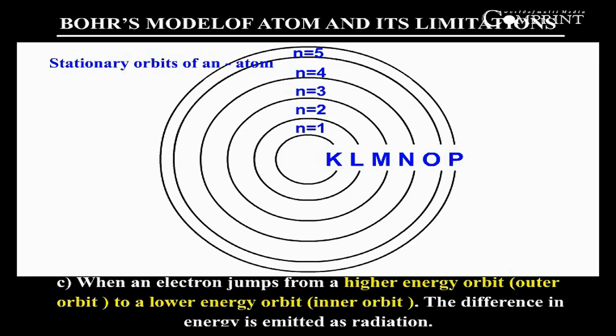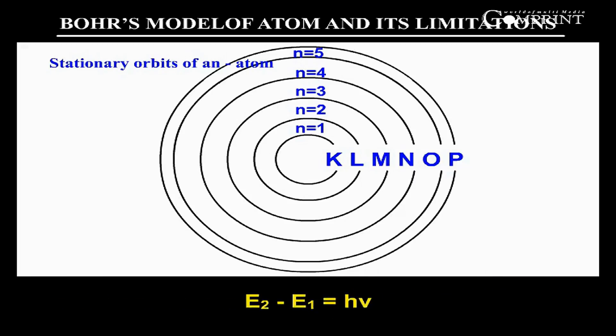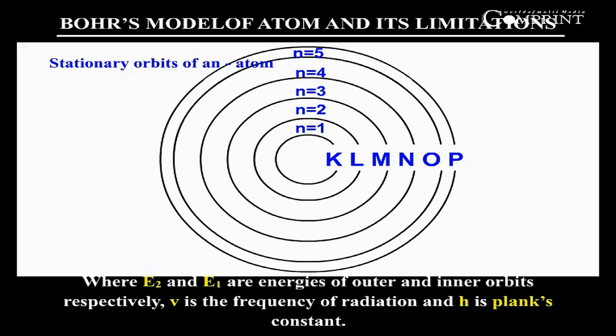When an electron jumps from a higher energy orbit to a lower energy orbit, the difference in energy is emitted as radiation. E2 minus E1 equals hν, where E2 and E1 are energies of outer and inner orbits respectively. ν is the frequency of radiation and h is Planck's constant.